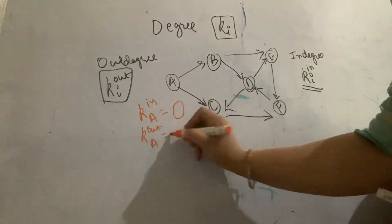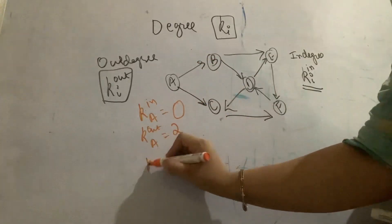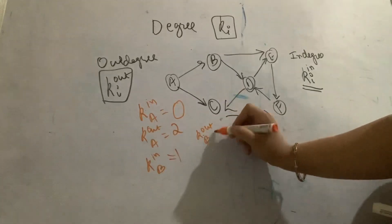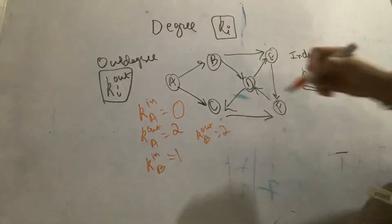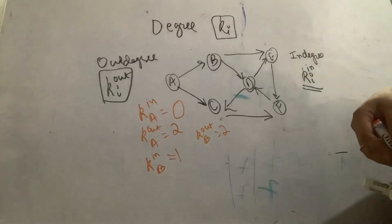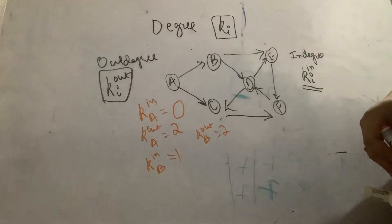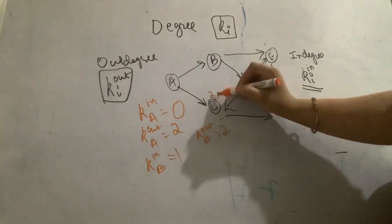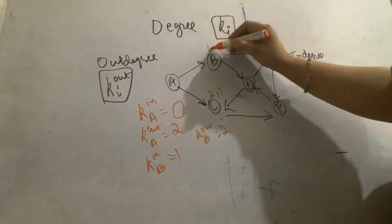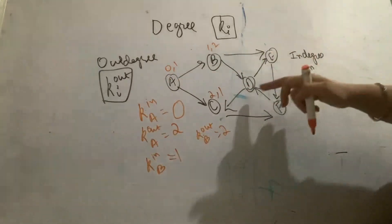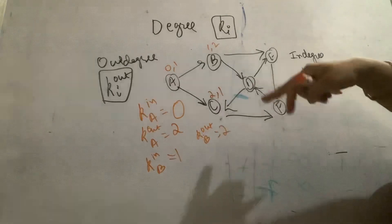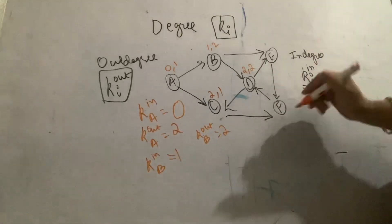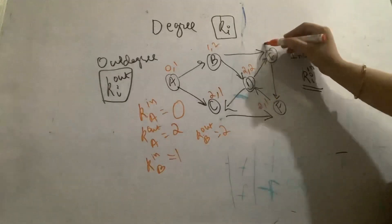K_out for node A is 2 — two edges are leaving the node. K_in for node B is 1, and K_out for node B is 2. For node C, in-degree is 2 and out-degree is 1. For another node, in-degree is 1, out-degree is 2; another has in-degree 0, out-degree 1. For node D, in-degree is 2 and out-degree is 2. For node F, two edges are coming in and one is leaving, so in-degree is 2 and out-degree is 1. Similarly, for another node, in-degree is 2 and out-degree is 1.